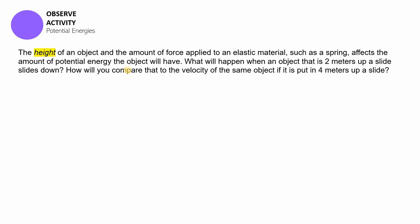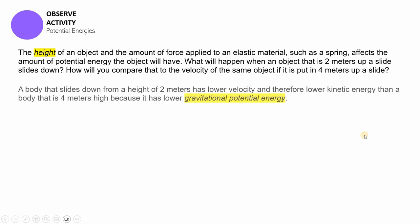when an object is put at a two-meter height on a slide, and another object is put on a similar slide but at a four-meter height, you will notice a difference when they slide down. The body that slid from the two-meter height appeared to be quite slower compared to the body that slid from the four-meter height. The one from the four-meter height slides faster, and that is because the one placed higher at four meters actually has greater gravitational potential energy.